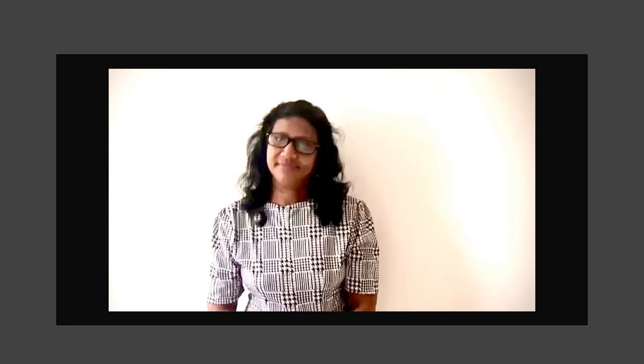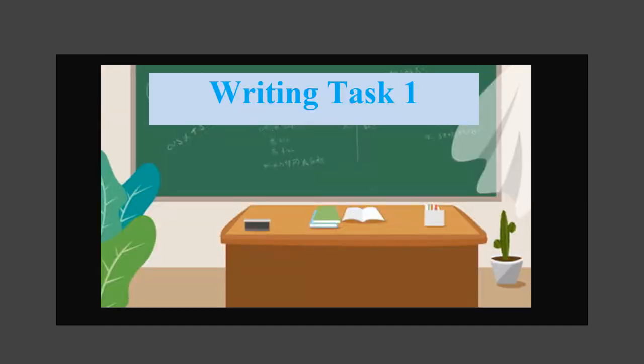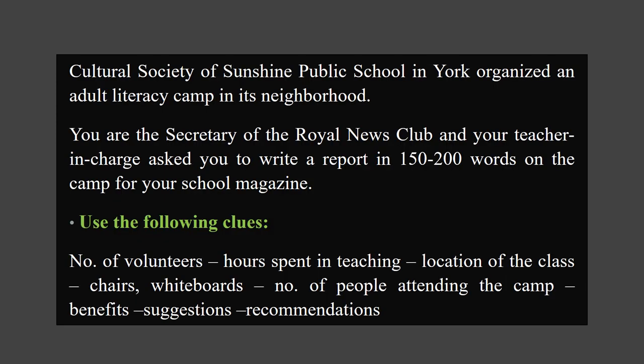That's perfectly fine. If one answer is wrong, automatically one more will be incorrect. Now we are moving to the main job — that is, physically writing a report. As mentioned before, you will be given a scenario. Writing Task 1: the Cultural Society of Sunshine Public School in York organises an adult literacy camp in its neighbourhood. You are the secretary of the Royal News Club and your teacher in charge asks you to write a report in 150–200 words on the camp for your school magazine. Use the following clues: number of volunteers, arts, painting, teaching, location of the class, chairs, whiteboards, number of people attending the camp, benefits, suggestions and recommendations.